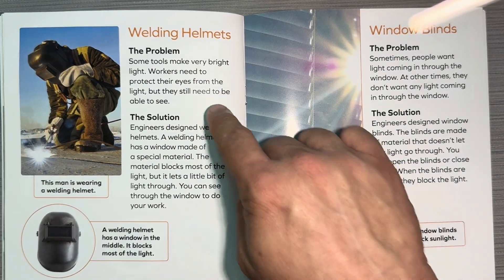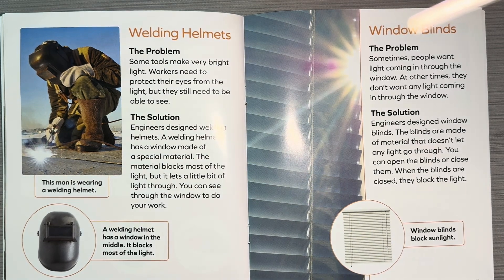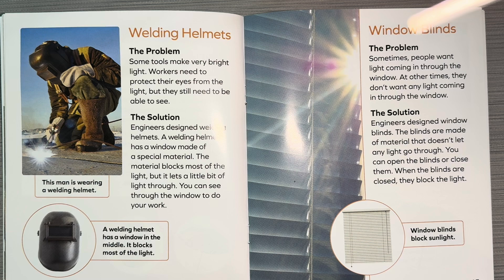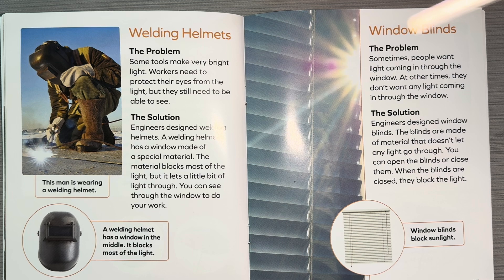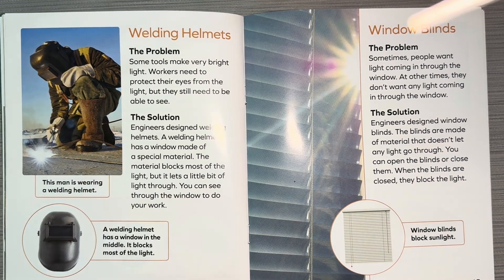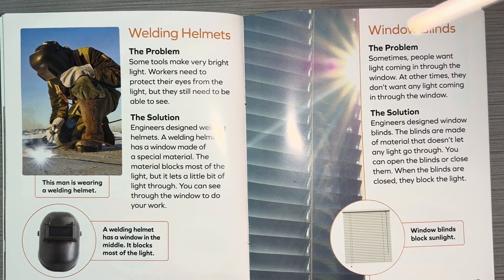Welding helmets. The problem: some tools make very bright light. Workers need to protect their eyes from the light, but they still need to be able to see. The solution: engineers design welding helmets. A welding helmet has a window made of special material. The material blocks most of the light, but it lets a little bit of light through — you can see through the window to do your work. This man is wearing a welding helmet. It has a window in the middle and blocks most of the light.